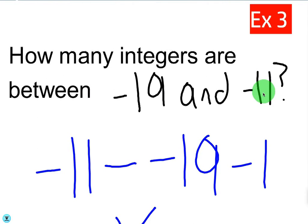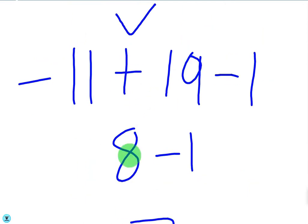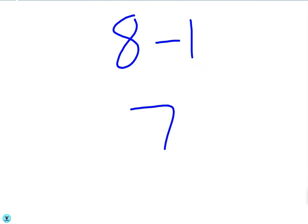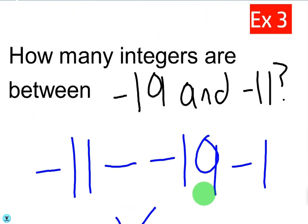How many integers are between negative 19 and negative 11? We have two negative numbers, but the same rule applies. Notice that negative 11 is bigger than negative 19. So we do negative 11 minus negative 19 — the two negatives make a positive — which becomes negative 11 plus 19, giving 8. Then 8 minus 1 equals 7, because we're finding integers between, not including the two endpoints. We can verify: the integers between negative 19 and negative 11 are negative 18, negative 17, negative 16, negative 15, negative 14, negative 13, negative 12 — which is 7 total. That confirms our rule works.